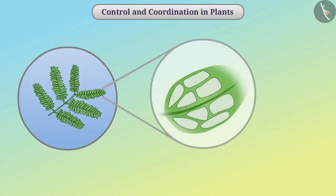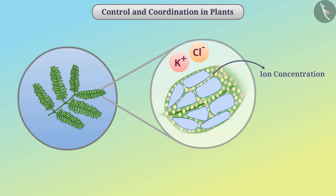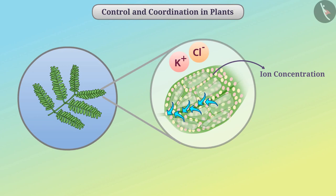The cells of mimosa plant leaves are filled with water, and their shape is maintained by water pressure, keeping the leaves open. When the plant detects touch, it releases chemicals like potassium and chloride ions. Increased ion concentration outside the cell reduces the concentration difference, so water is transported out through osmosis, causing contraction of cells and closing of the leaves.